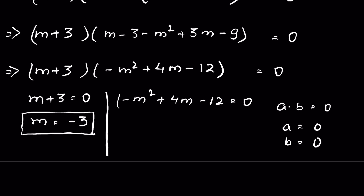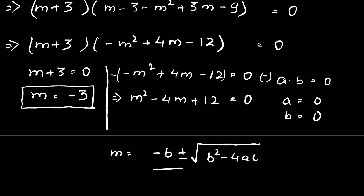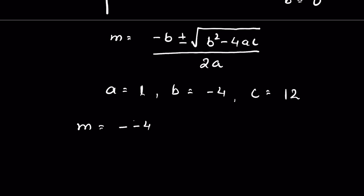For the second case, minus m squared plus 4m minus 12 equals 0. Multiplying both sides by minus 1 gives m squared minus 4m plus 12 equals 0. This is a quadratic equation, so we use the quadratic formula: m equals negative b plus or minus the square root of b squared minus 4ac, all over 2a, where a equals 1, b equals minus 4, and c equals 12.